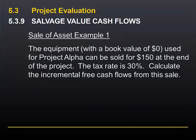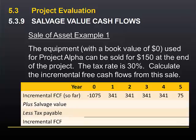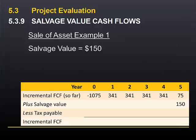Returning again to Project Alpha, the equipment has a book value of zero and can be sold for $150 at the end of the project. The tax rate is 30%. This shows the incremental cash flows from the previous module: a $1,075 cash outflow in year zero, then $341 for four years, and $75 in year five. The salvage value is $150, and that's clearly a cash inflow, so it's recorded in year five.